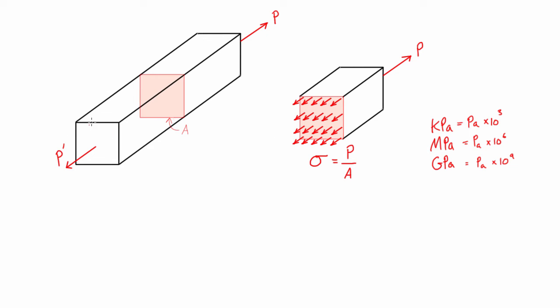And lastly, for problems involving normal stress, we're going to be assuming that the axial forces here are being applied at the centroids of the cross-section. So you'll notice I did draw this right at the center of the square here. This is called centric loading, and this will simplify our analysis. At this level, we will only be having centric loading.